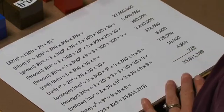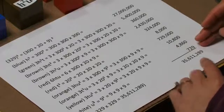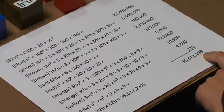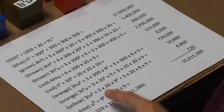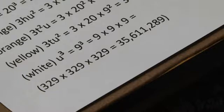To let the students check their own work, I would have them add up all of our products. And we would get 35,611,289. And then they could take 329 cubed or 329 times 329 times 329. And they get 35,611,289.